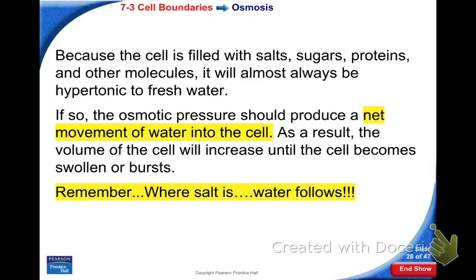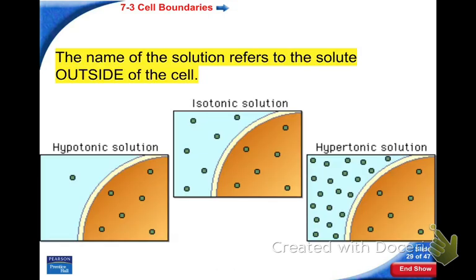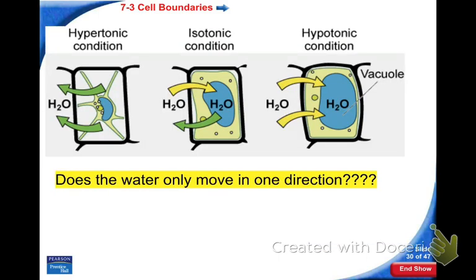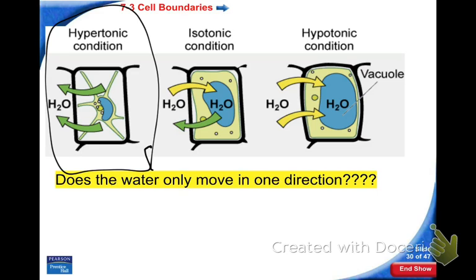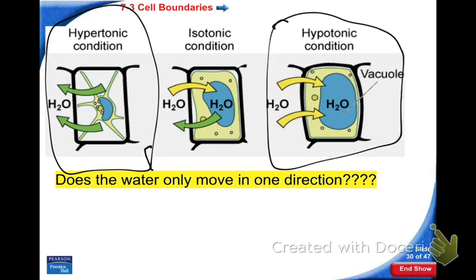Where salt is, water follows — and this is what will help us predict what's happening with our Sailor in the Sea lab. Hypotonic, isotonic, and hypertonic refer to the solute outside of the cell. In a hypotonic solution, there's less solute outside the cell; isotonic has equal amounts inside and outside; hypertonic has more solute outside. Water always moves in both directions. When we put salt water on the plant cell, it shrank — that was a cell in a hypertonic solution.